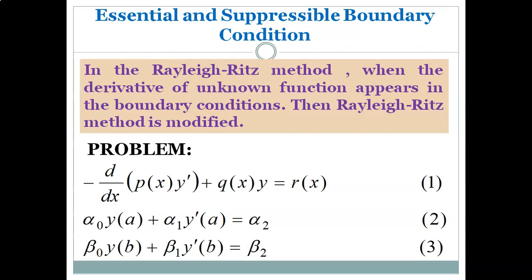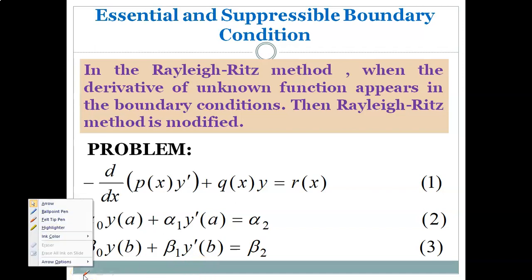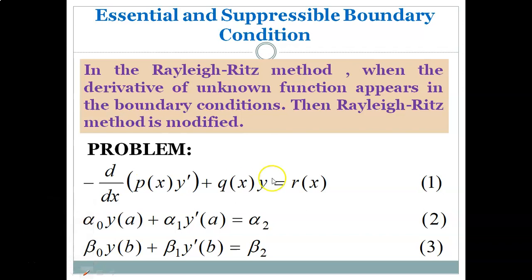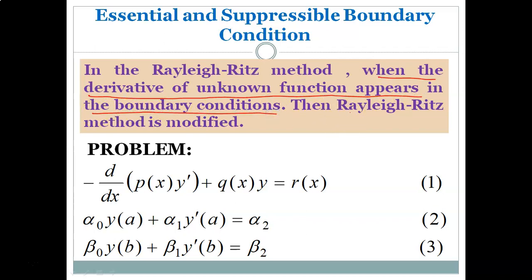In the earlier lecture we discussed that when we are given a boundary value problem, certain boundary values are given, and we have to choose some approximate solution or choice function y(x) such that the given boundary conditions are satisfied. But now we need certain modifications in the Rayleigh-Ritz method in the situation when the derivative of the unknown function appears in the boundary conditions.